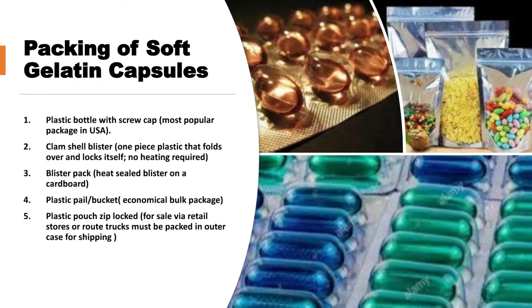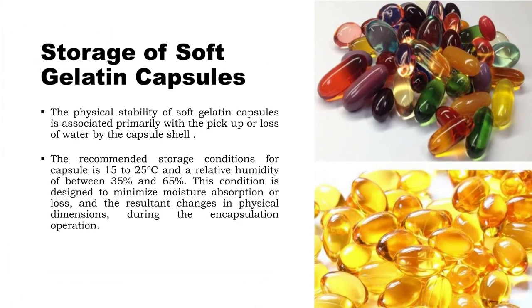Larger bulk packaging in buckets or plastic pails is economical. Moreover, these days plastic zip-lock pouches are also found at retail stores. These are the different kinds of packaging used for soft gelatin capsules. The physical stability of soft gelatin capsules is primarily concerned with the pickup or loss of water by the capsule shell.